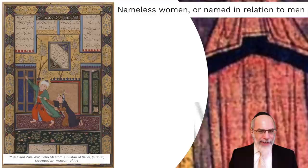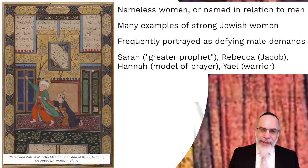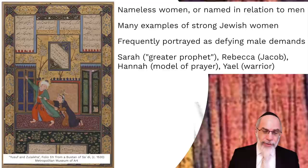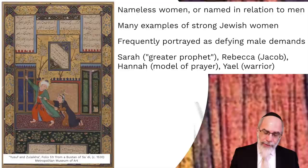There are many examples in the Bible of strong Jewish women. Typically, they're named when they are strong, and often they're quite strong in the sense of defying male demands. For example, Sarah, who insists on the expulsion of Hagar — when Abraham hesitates, God speaks to him and says, listen to her. The oral tradition, as Rashi quotes, says: because she is a greater prophet than you are. Rebekah, of course, famously decides she knows better than her husband Isaac as to which of her two sons, Esau and Jacob, receives the blessing, and she engineers Jacob's reception of it.